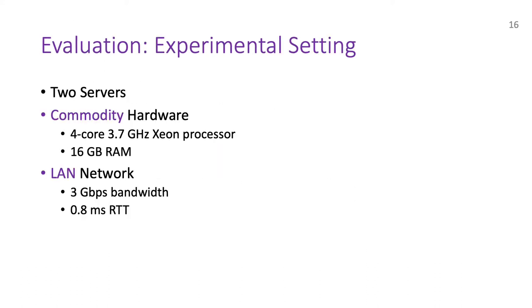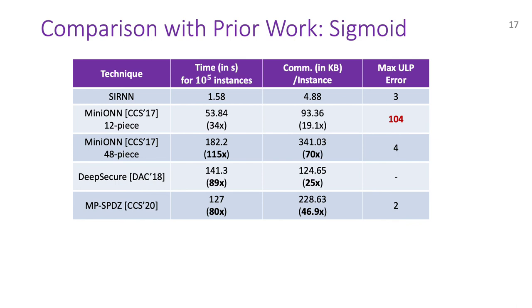Now, we move on to the evaluation of our system, which was performed on two servers with commodity hardware in a LAN setting. This table shows our comparison with prior works for securely evaluating 10 to the power 5 sigmoid instances. Minion used a 12-piece linear spline to evaluate their benchmarks, which we found has large ulp errors. To achieve comparable precision to SIREN, Minion's recipe would instead require 48 pieces, which makes it 115 times slower than SIREN. The other two works, namely DeepSecure and ABY3, are also at least 80 times slower. Thus, evaluating sigmoid using SIREN is precise and 80 to 115 times faster than prior works.